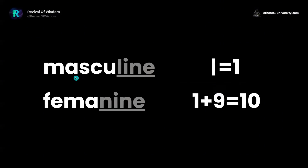Look at the word masculine. Masculine contains 'line' — just one line, which represents order. One. Feminine contains 'nine.' One and nine equals ten — zero and one, the binary code of all creation.